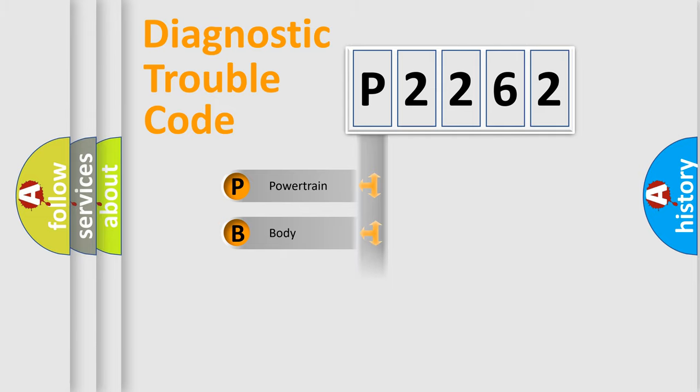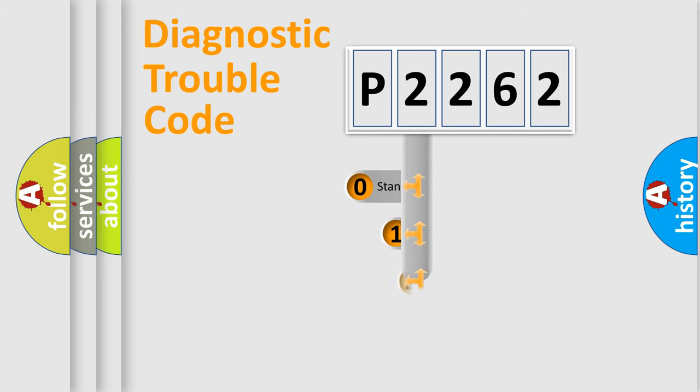Powertrain, Body, Chassis, Network. This distribution is defined in the first character code.